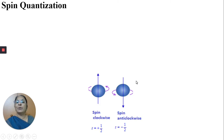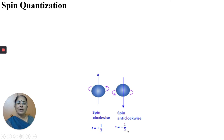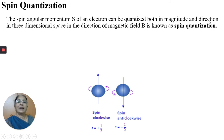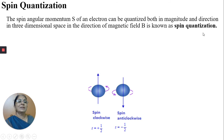Now what is spin quantization? The electron can have clockwise spin or anticlockwise spin. The spin quantum number can have values of plus half or minus half. Just like orbital angular momentum, the spin angular momentum S of an electron can also be quantized both in magnitude and direction in three-dimensional space in the direction of the magnetic field — this is known as spin quantization.